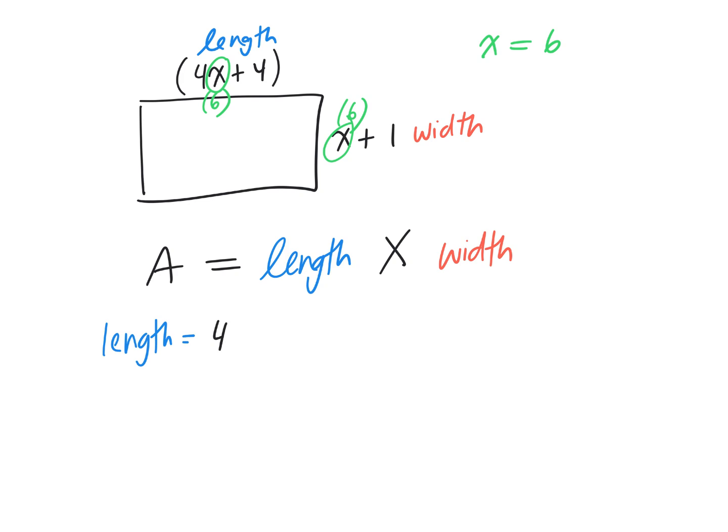Thank you. Four times six plus four, we're doing area now, so it's four times six, 24 plus four, 28 centimeters. So the actual length is 28 centimeters. What's the actual width? Srija, it was six, so x which is six plus one equals seven centimeters. Excellent, the actual width is seven centimeters.